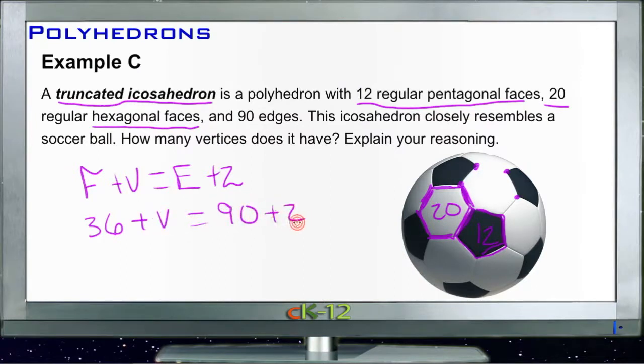Euler's theorem says that the number of faces plus the number of vertices equals the number of edges plus two. The number of faces we have: we have 12 of the pentagons and 20 of the hexagons, so we have a total of 36 faces, and then we have 90 edges plus 2. What we're missing is the number of vertices, so we'll just leave that as a variable V.